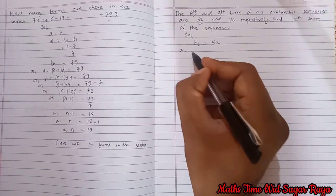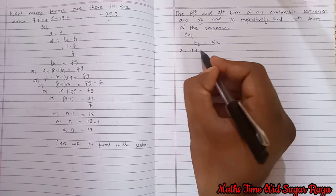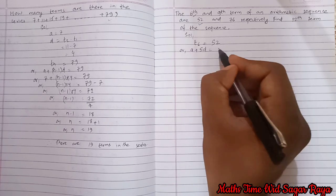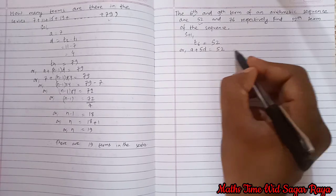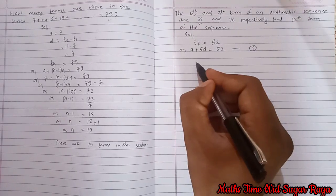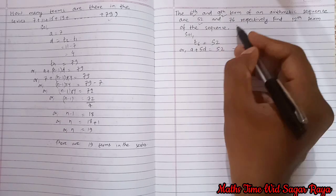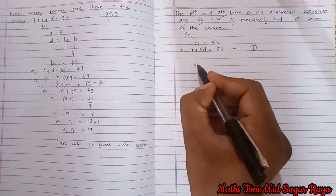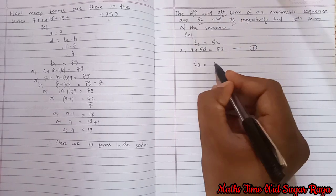So we have the formula for t6: t6 is equal to a plus 5d equal to 52. So let's suppose this as equation 1. And then we have got ninth term 76, so ninth term means t9, it is equal to 76.